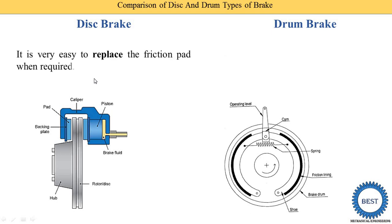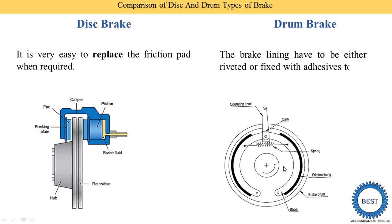Third point: it is very easy to replace the friction pad in a disc brake when required, because the friction pads are open to the atmosphere. In a drum brake, the brake lining has to be either riveted or fixed with adhesive to the brake shoe, so it is difficult. You also need to remove the wheels, open the drums, and then replace the friction linings. In a disc brake, the friction pads are open to the atmosphere so we can easily replace them.